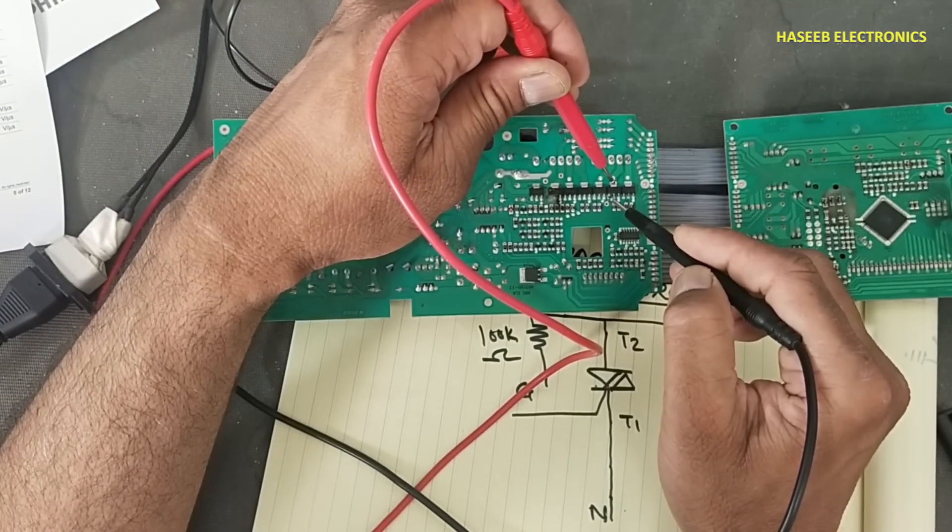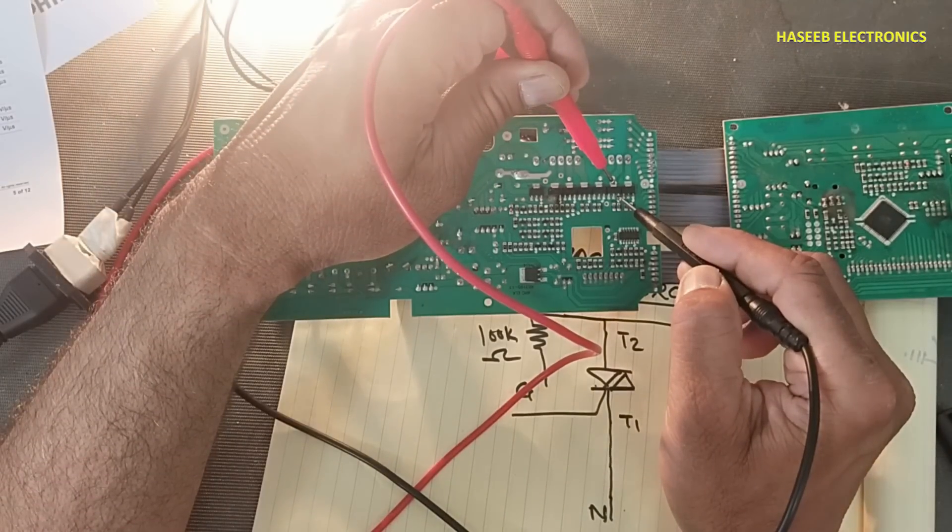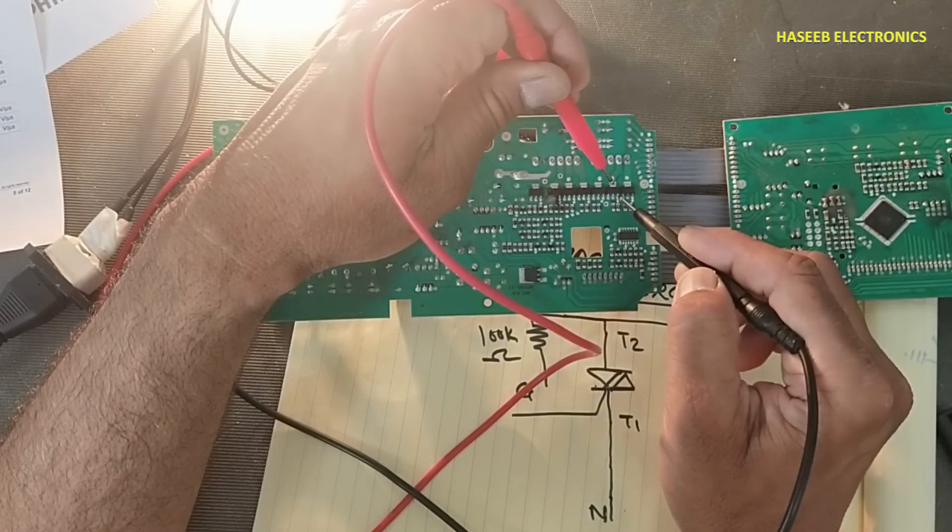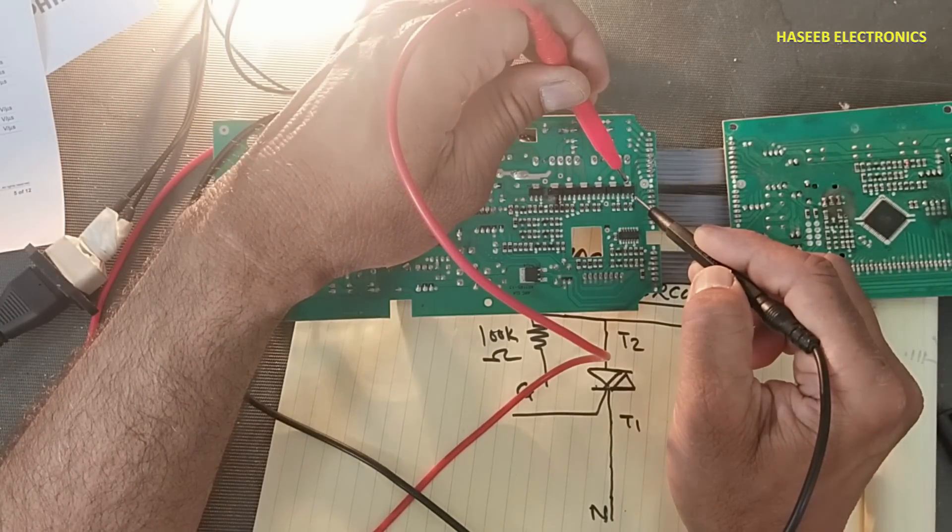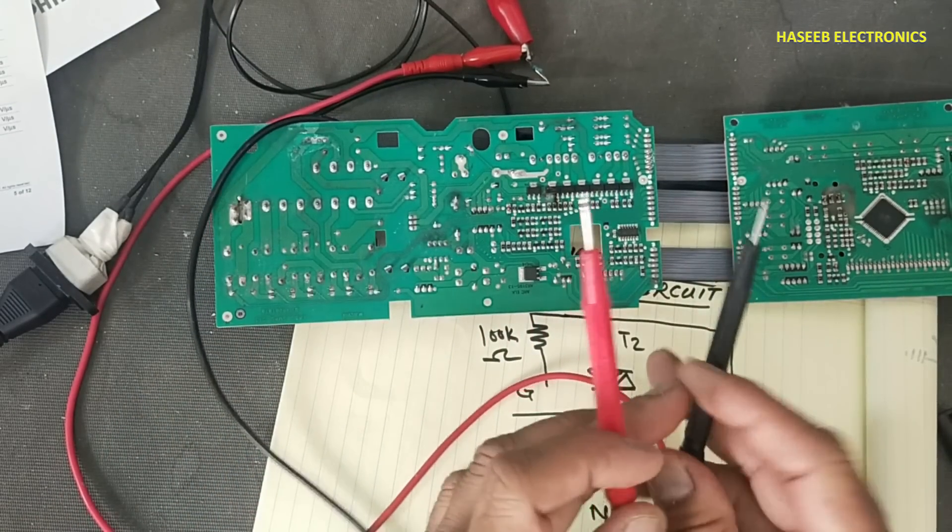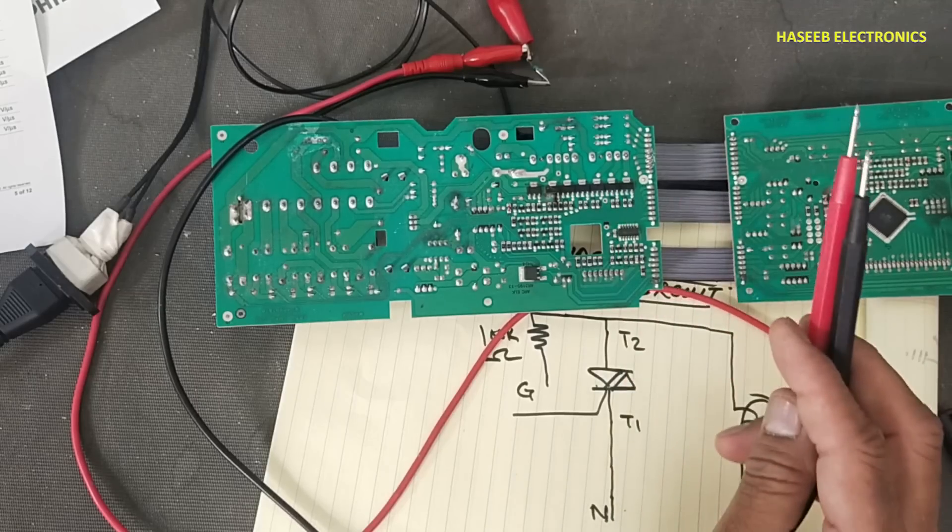The next triac is turning on. We'll touch this signal probe to the gate pin. If we touch pin 1, no problem. Pin 2, no problem. Pin 3, the right side pin - that triac will turn on. This is the safe method for testing a triac within circuit.